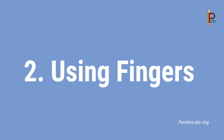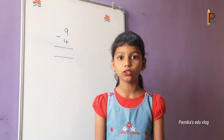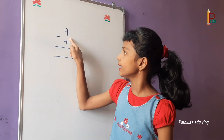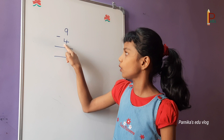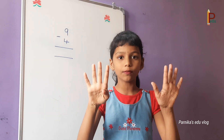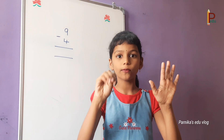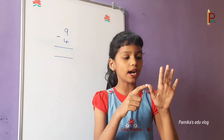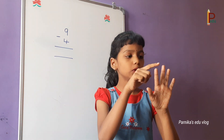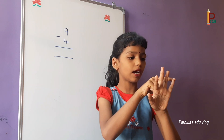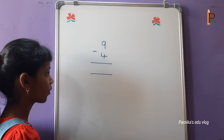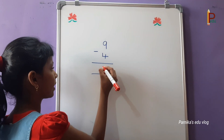Number 2: Subtraction using fingers. Let's do subtraction by using fingers. 9 minus 4. We take 9 fingers and close 4 fingers. How many fingers are left? 1, 2, 3, 4, 5. We write 5 here. So the answer is 5.